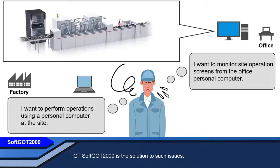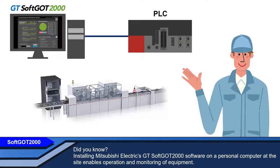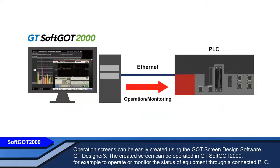Did you know? Installing Mitsubishi Electric's GT-SOFT GOT2000 software on a personal computer at the site enables operation and monitoring of equipment. Operation screens can be easily created using the GOT Screen Design Software GT-Designer 3. The created screen can be operated in GT-SOFT GOT2000 to operate or monitor the status of equipment through a connected PLC.